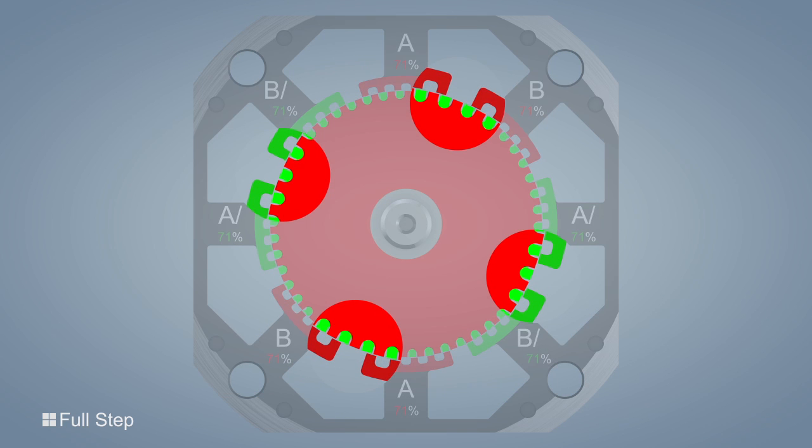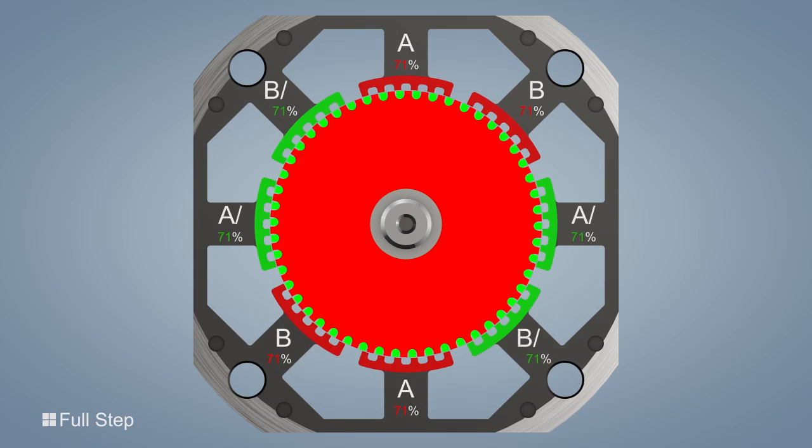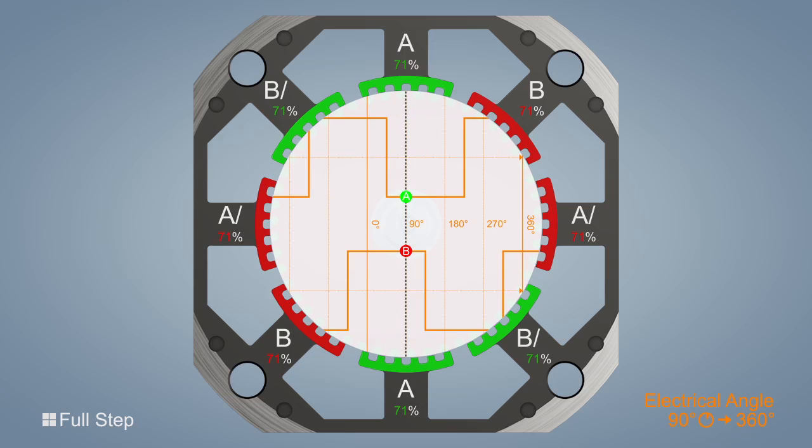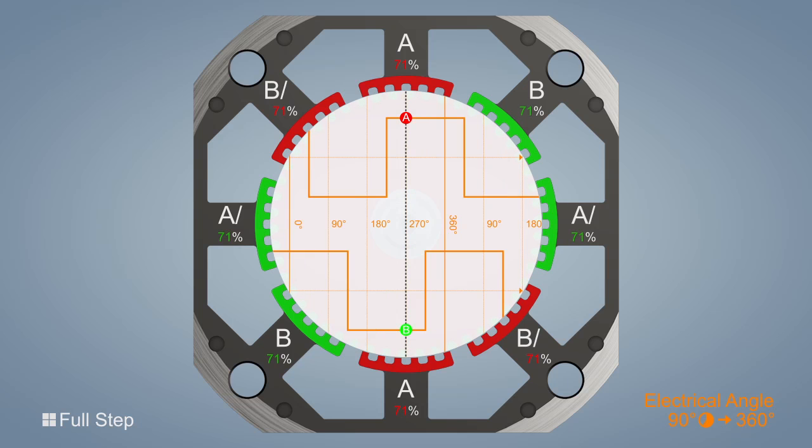By contrast, the forces of attraction and repulsion between the evenly magnetized pole shoes and the rotor poles are almost equal. The winding is energized in accordance with the phase model in four electrical steps, from the initial position of 0 degrees through 90 to 360 degrees.